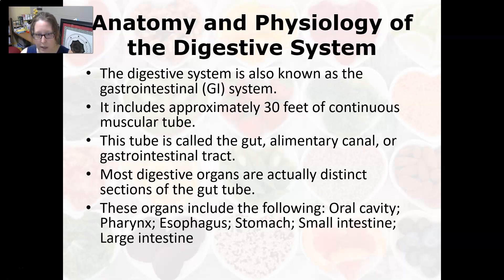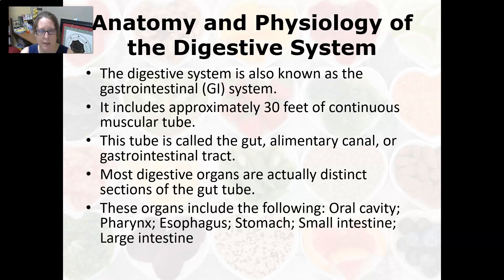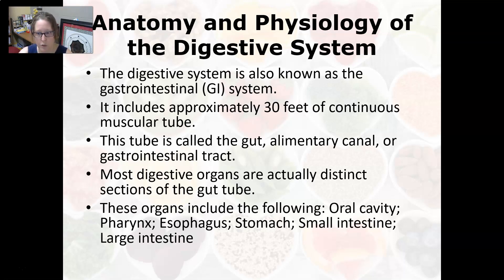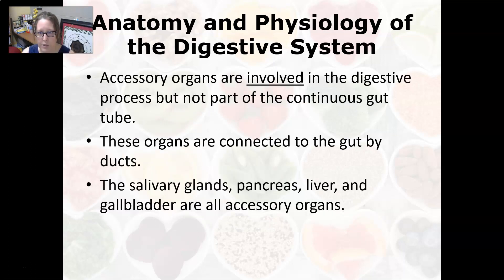Most digestive organs are actually distinct sections of the gut tube. For example, the skinnier section of the esophagus builds up into the larger stomach — it's actually just part of this continuous tube. The organs that are part of the gut tube include the oral cavity, which is the opening of the tube, then the pharynx, which is the throat, the esophagus leading down to the stomach, which leads to the small intestine, then to the large intestine, and the anus is the exit. The accessory organs are involved in the digestive process by the fluids that they secrete.